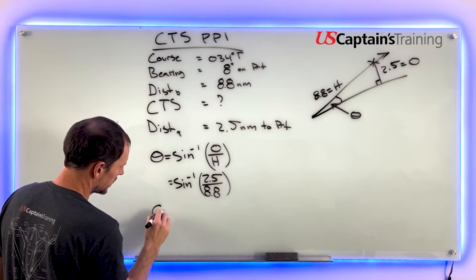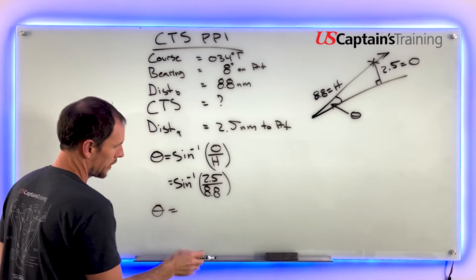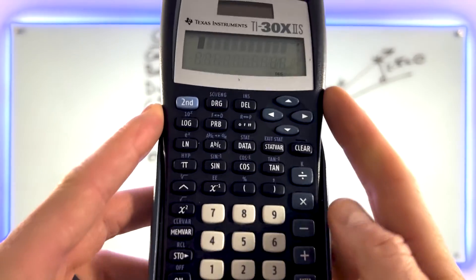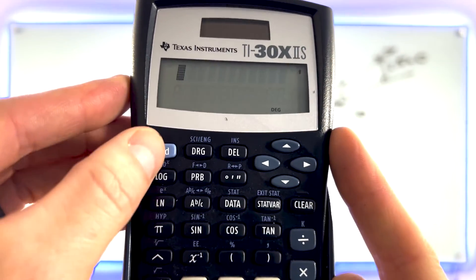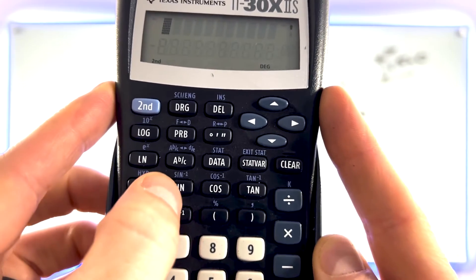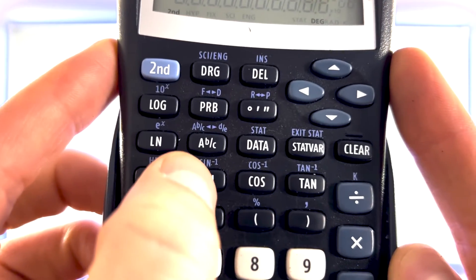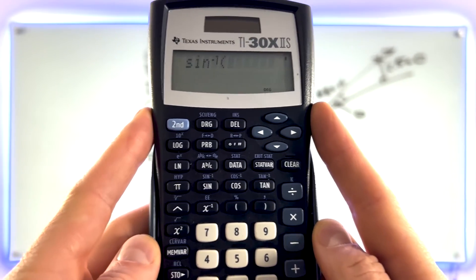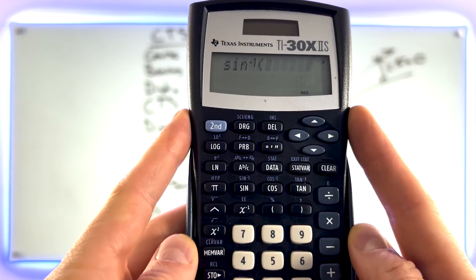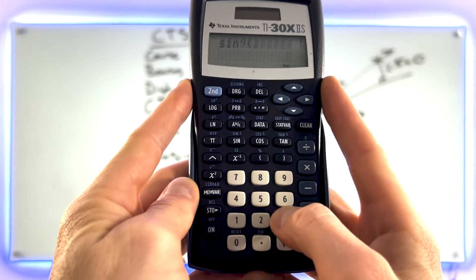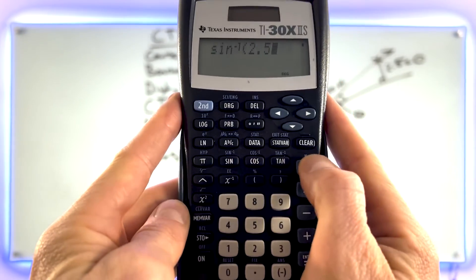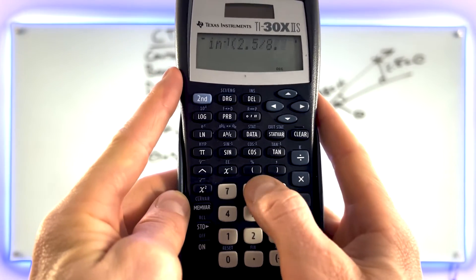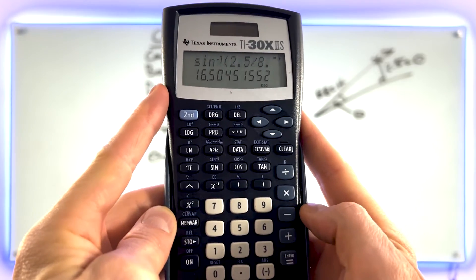That'll give us theta. On the calculator, we go second, then sine - the blue one, sine inverse. Then we put in our regular division problem: 2.5 divided by 8.8 equals 16.5.